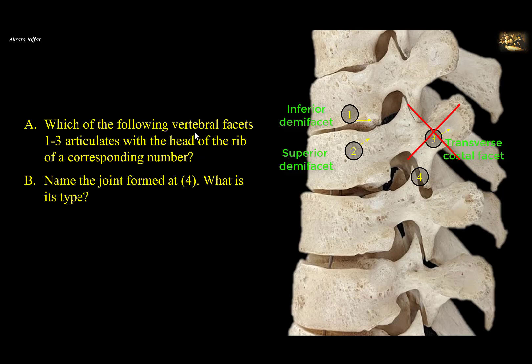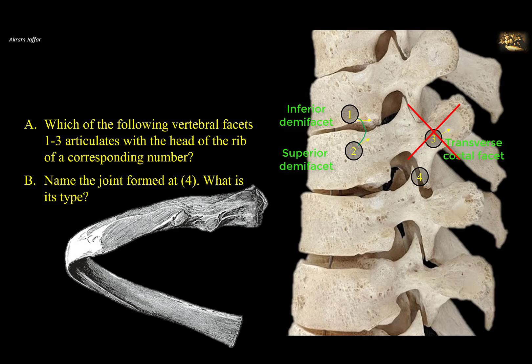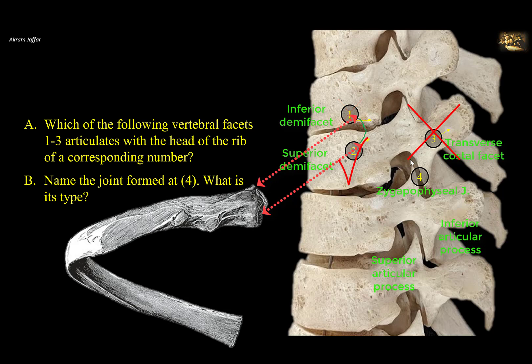In ribs 2 to 9, the head is wedge-shaped and carries two articular facets, forming complex joints with the costal facets on the body of thoracic vertebrae — these are called costal vertebral joints, which are plain synovial joints. The inferior facet on the head of the rib articulates with the superior costal facet on the body of the numerically corresponding vertebra — that is facet 2. The superior facet articulates with the inferior facet on the body of the vertebra above. Therefore, facet 2 is the facet that articulates with the head of the rib of a corresponding number. The joint at 4, between the superior and inferior articular processes of adjacent vertebrae, is a plain synovial joint called the zygapophysial or facet joint.